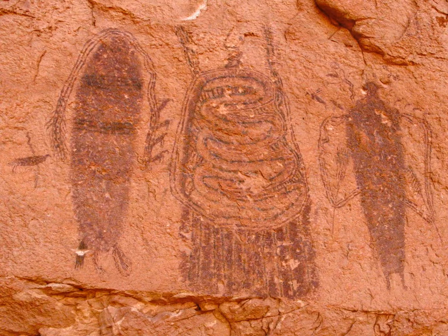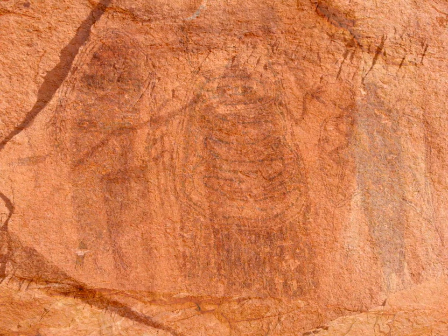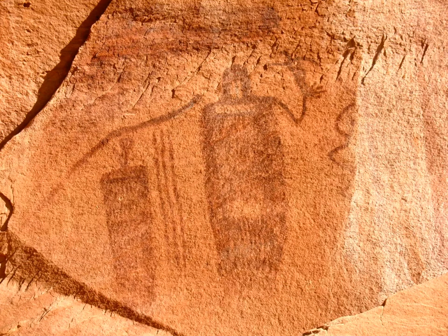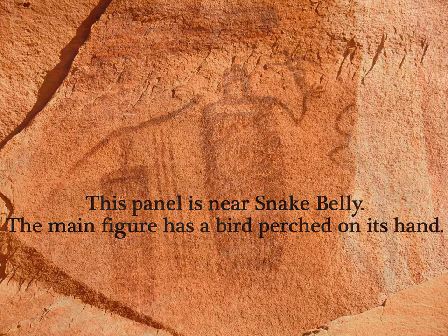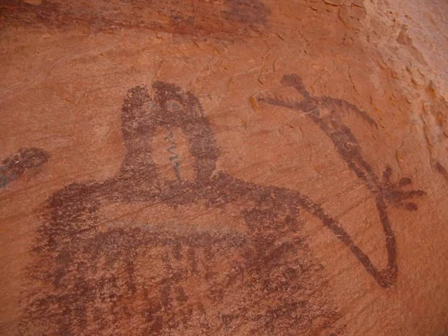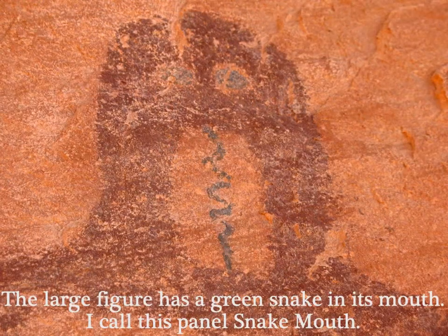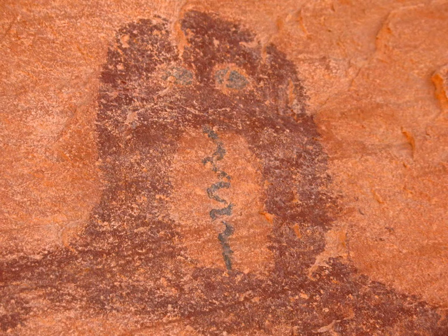Across the canyon from the Intestine Man is a panel I call Snake Mouth. The main figure has a bird perched on its hand, and there are big snakes crawling around up there. Can't tell if it's a raptor or a raven — either one would work. The large figure has a green snake in its mouth and green eyes. I call this panel Snake Mouth, and it'll give you dreams.